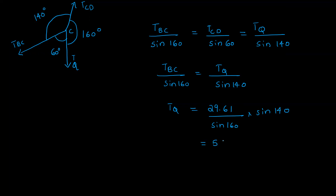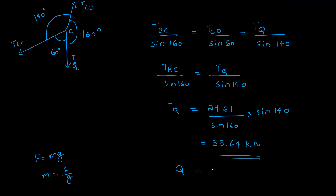Then TQ equals TBC value of 29.61 divided by sine 160, multiplied by sine 114. That is equal to 55.64 kN. Dividing by 9.8 gives the mass m equal to 5.677 kg.